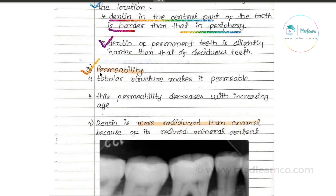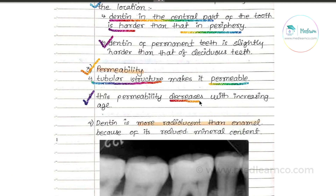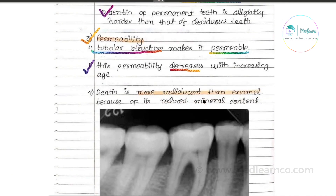There is also permeability. The dentin is permeable due to its tubular structure. Permeability decreases with increasing distance from the pulp — where there is more dentin, the permeability is more toward the pulp.